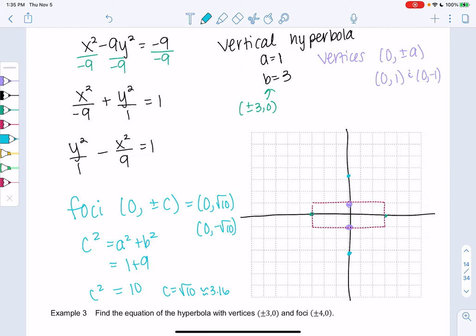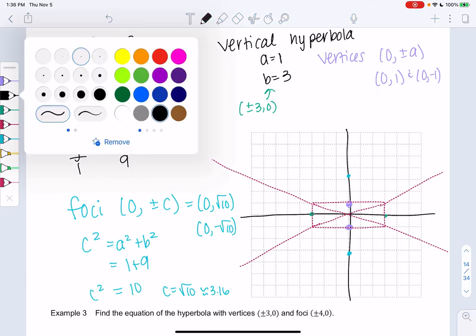And then once we draw the asymptotes, we can graph. So the aux box again is coming from a and b. So we drew the aux box, and then we'll draw asymptotes. So they go from the corners. So this aux box is telling me this is actually a pretty wide hyperbola. So you'll see that in a second. So those are my asymptotes. You could find the equation if you wanted to. You don't need the equation.